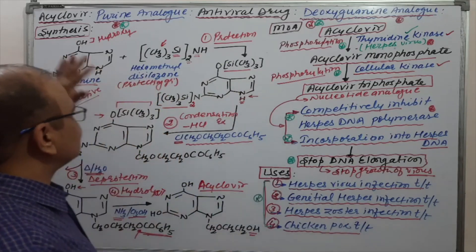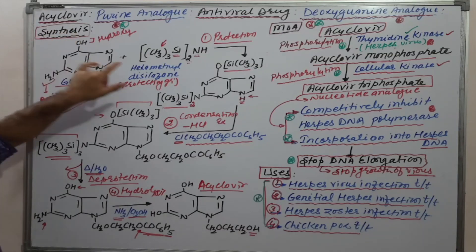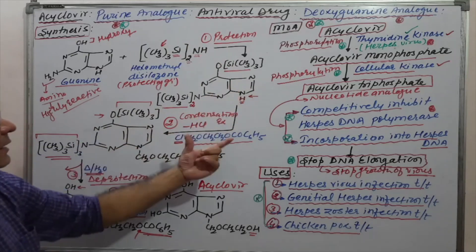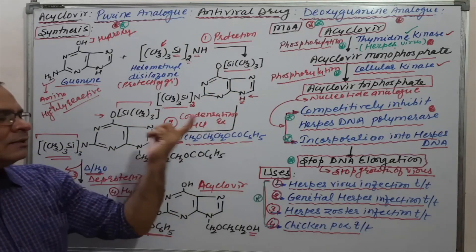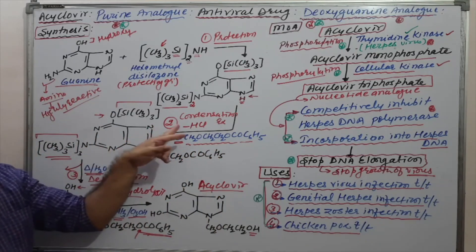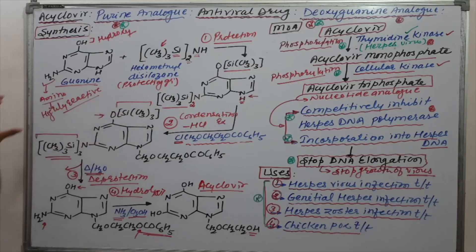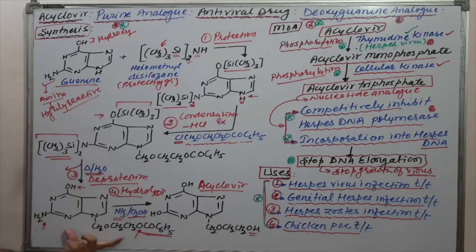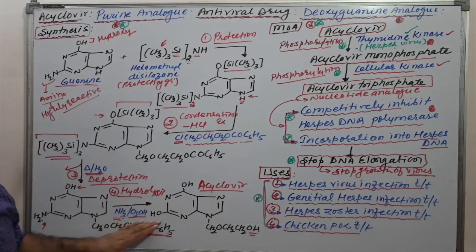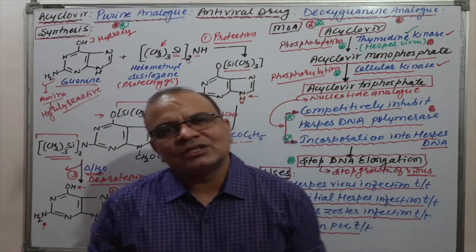Quick review of the synthesis: guanine's OH group and NH2 group are protected using hexamethyldisilazane. After protection, a simple condensation reaction attaches the benzyloxy side chain to the respective nitrogen, removing HCl. The protecting group is removed by heating with water, giving the OH and NH2 containing intermediate. The benzyloxy group is then hydrolyzed using ammonia and methanol, giving acyclovir.